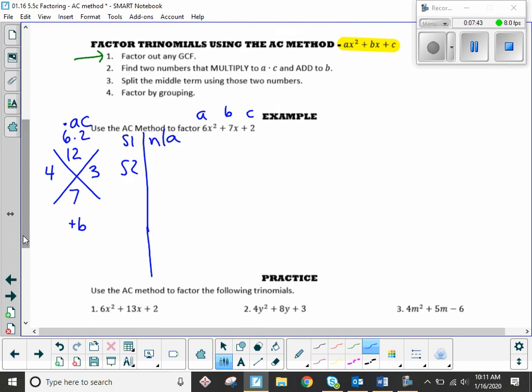So what you do then, so that's step two, right there. Step three says to split the middle term using those two numbers. Just your middle term. Your first term stays the same, so 6x squared. We're rewriting 7x now using these two numbers we got over here. 4x plus 3x. And it does not matter which one you write first, you will get the same answer. So don't stress about which one you write down. And then the 2 goes on the end.